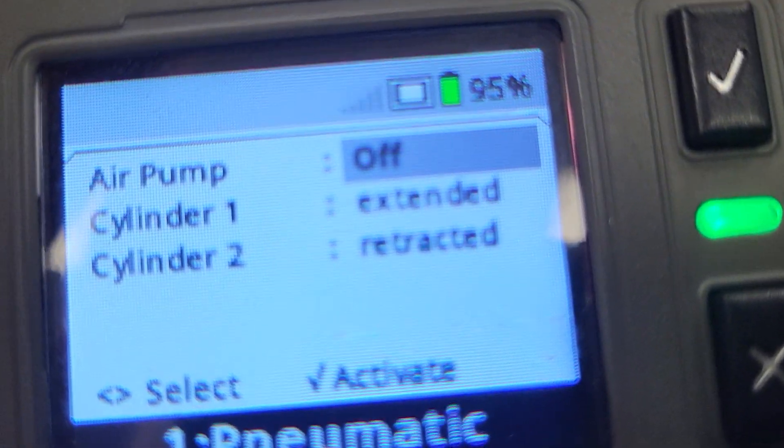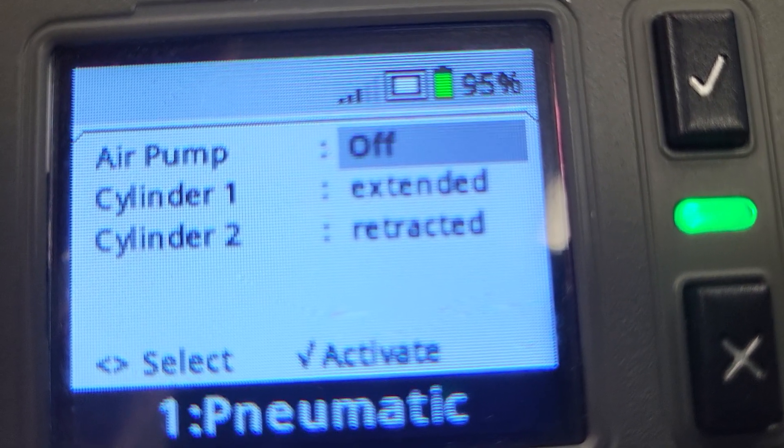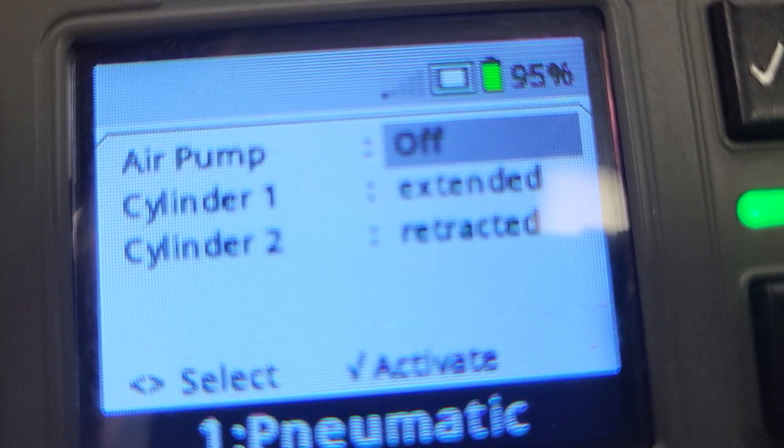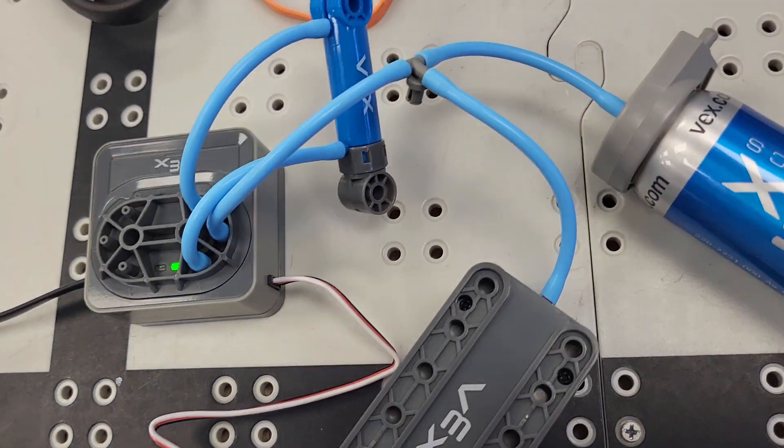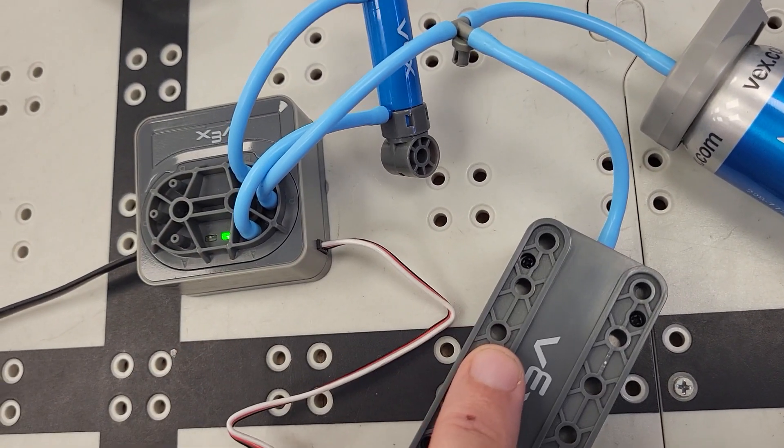Each of these will have three settings where the air pump is on and cylinders one and two are extracted or retracted. The solenoid goes directly into the brain and then this can turn on a pump if it's connected.